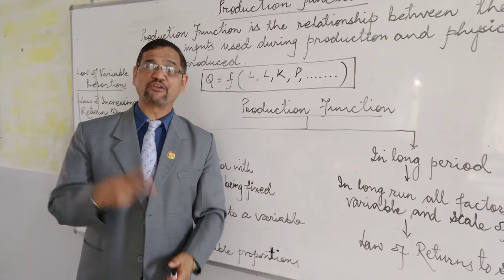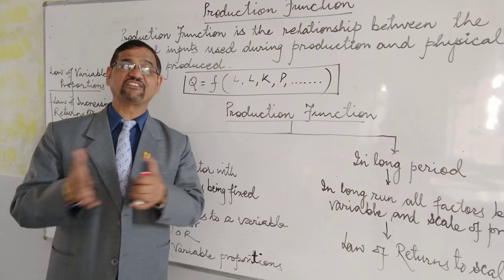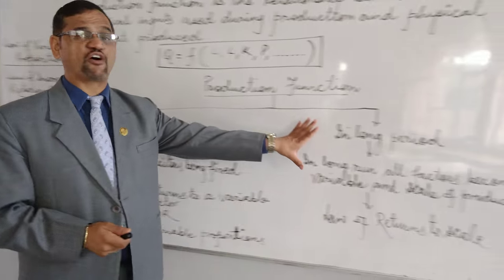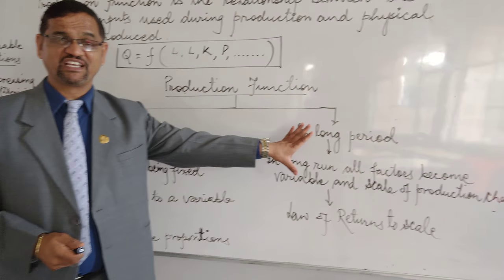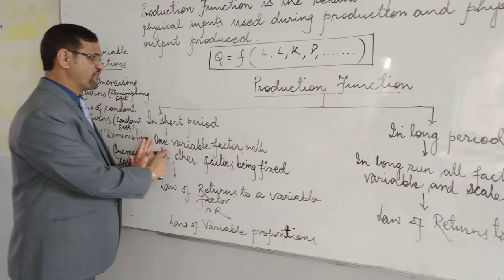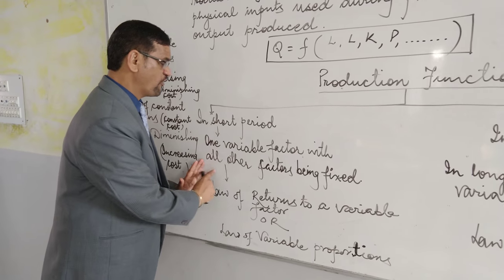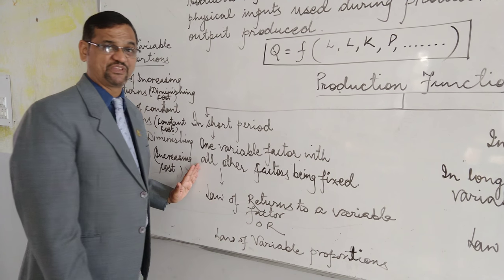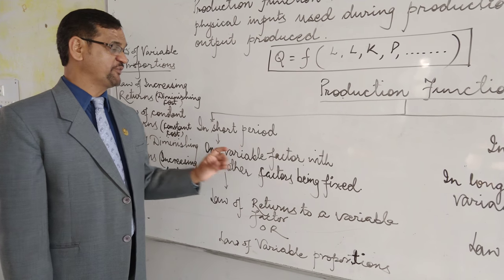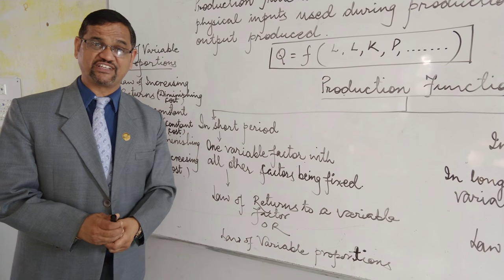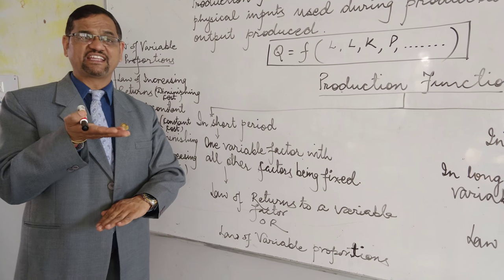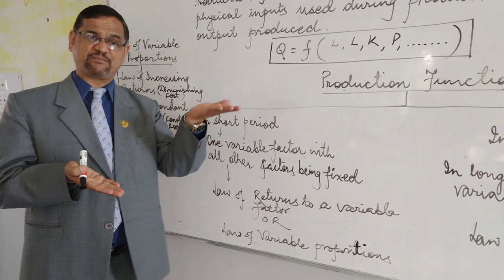This production function can be studied in two ways: either in the short period or in the long period. In the short period, there is only one variable factor with all other factors being fixed. We keep one variable factor constant while all others remain constant, and observe what happens due to this variable factor.